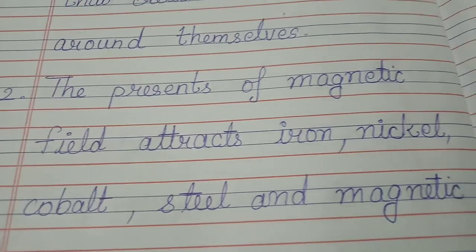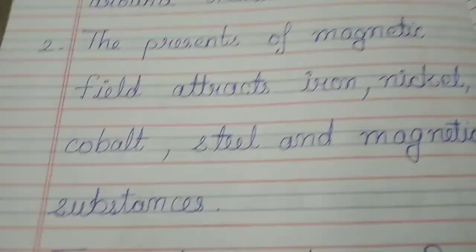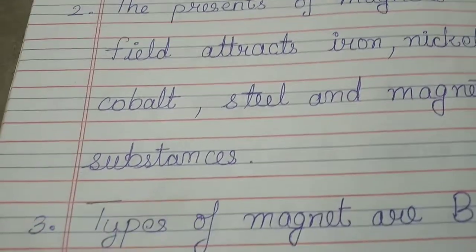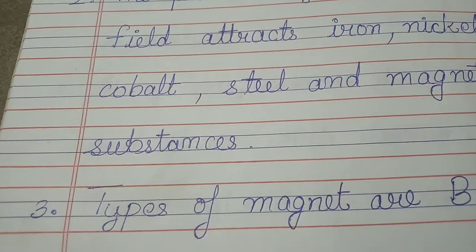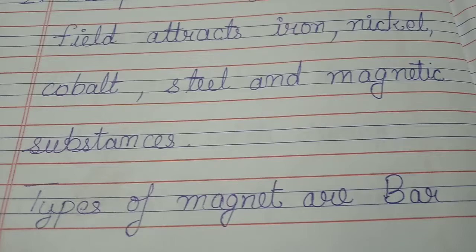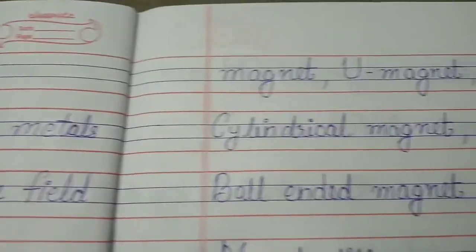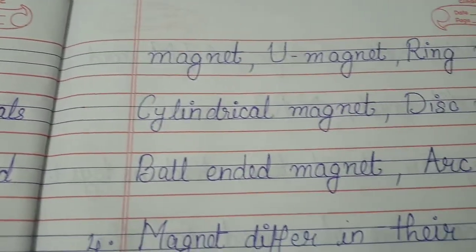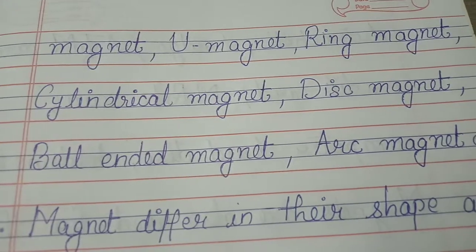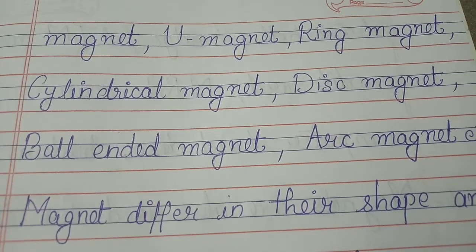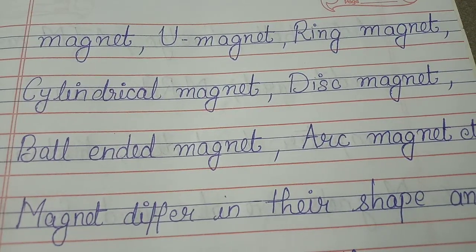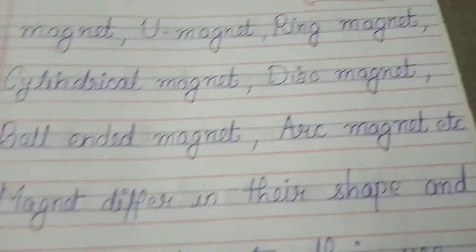Steel and magnetic substances. Types of magnets are bar magnet, U magnet, ring magnet, cylindrical magnet, disc magnet, ball ended magnet, arc magnet, etc.